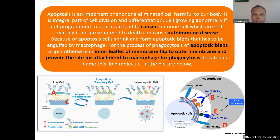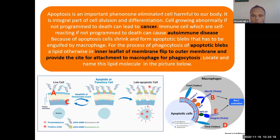Locate the name of that lipid shown here in the picture. Everything — what apoptotic blebs are and how phagocytosis by macrophages works — is described in the picture. You can see macrophage receptors binding the blebs. Locate the lipid through which macrophages bind apoptotic blebs, which flips from the inner membrane to the outer membrane to provide attachment.